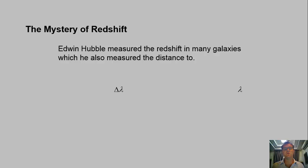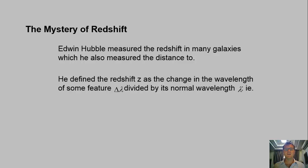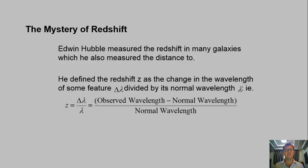Now, what happened was the mystery of the redshift was looked into by Edwin Hubble, and he measured the redshift in many galaxies and also measured their distance to them. So he then defined the redshift as the change in wavelength of some feature, the change in wavelength, divided by its normal wavelength. So he came up with this value of z was Δλ divided by λ, or observed wavelength minus normal wavelength divided by normal wavelength. So this was how he defined redshift.